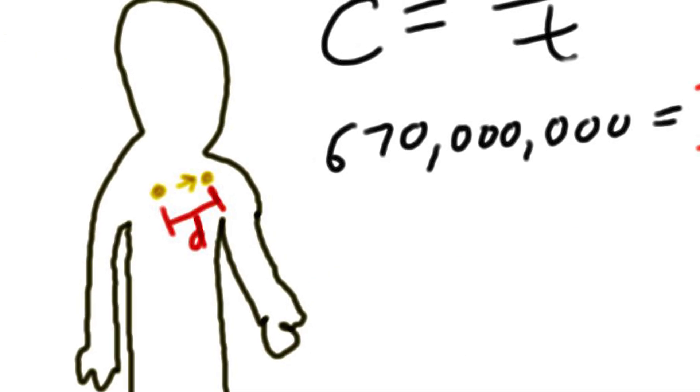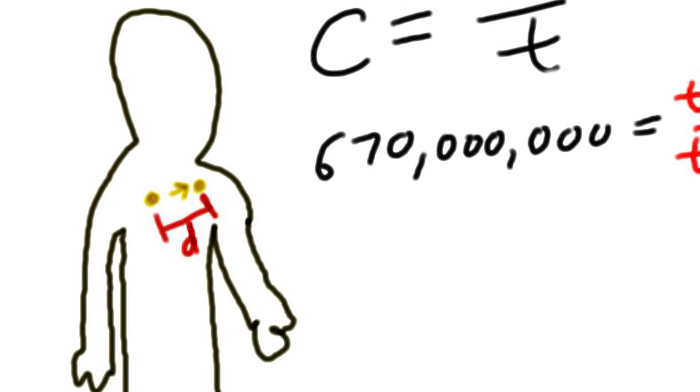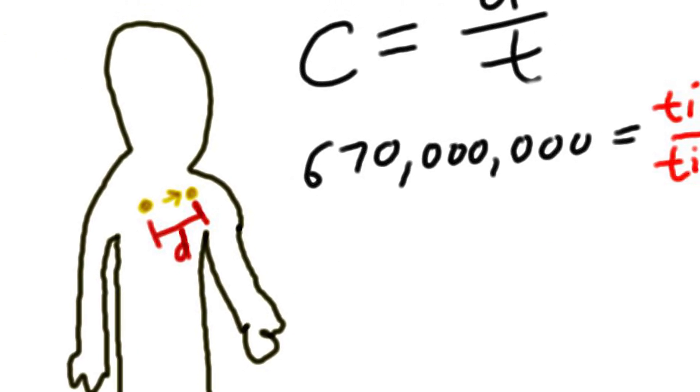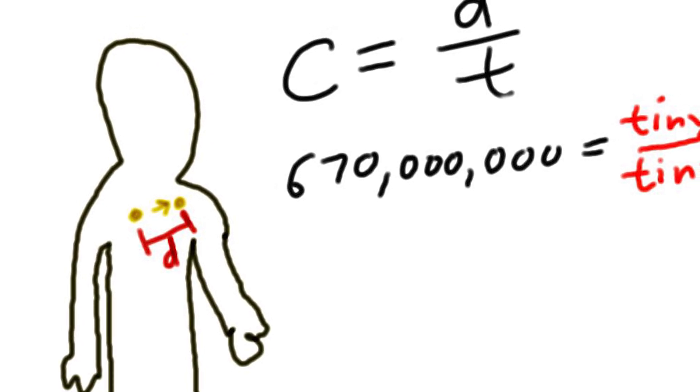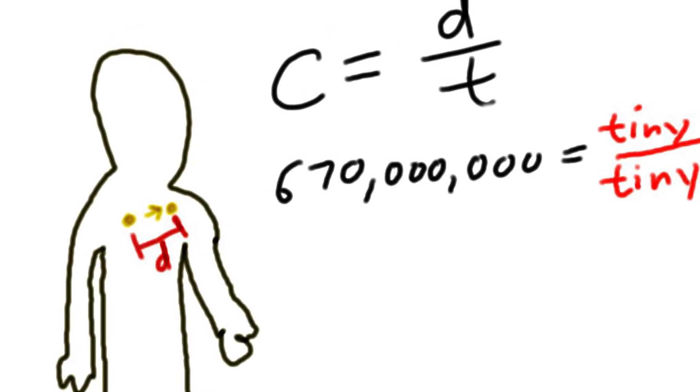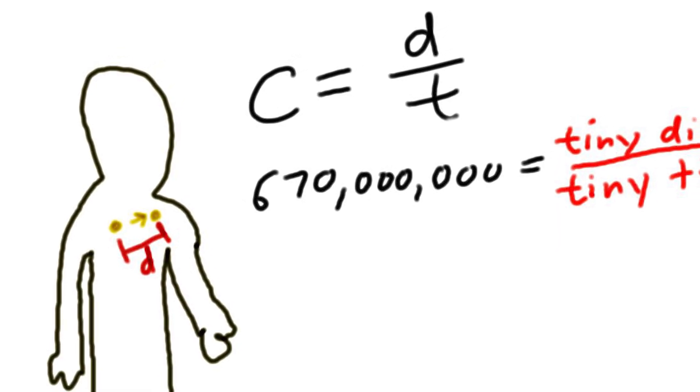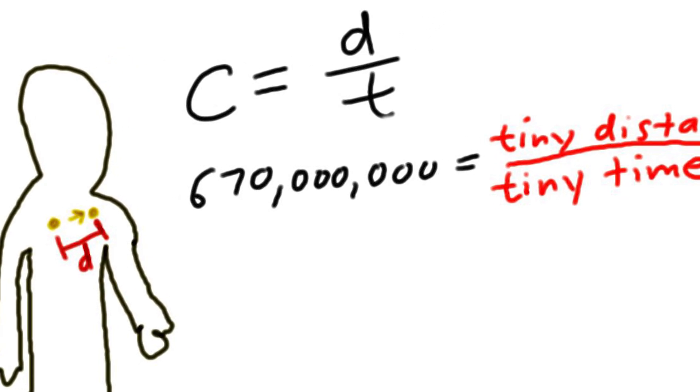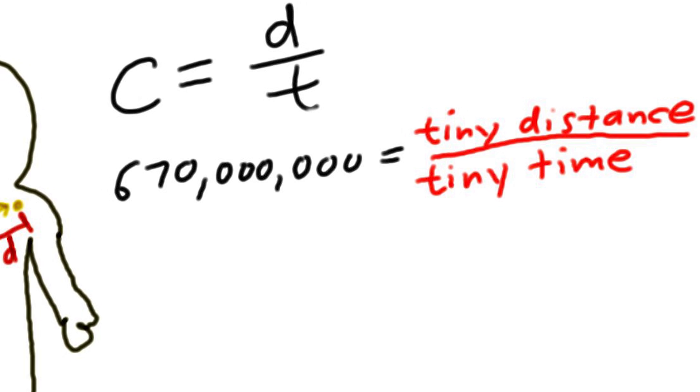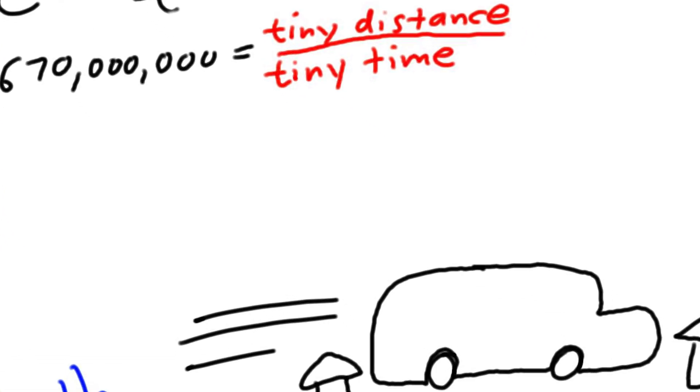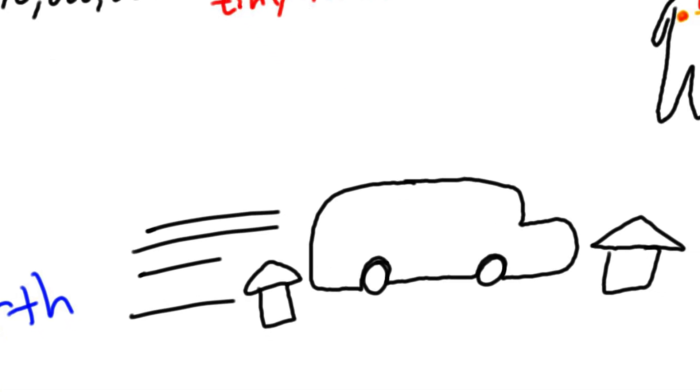So, for any bodily activity to occur on Earth, the photons in your body need to travel a certain, very tiny distance, and since the speed of light is 670 million miles per hour, this distance is traveled, and the activity happens, in an extremely short amount of time. Think of a photon like a car traveling at 120 miles per hour just to get next door. It's going to take a very short amount of time.